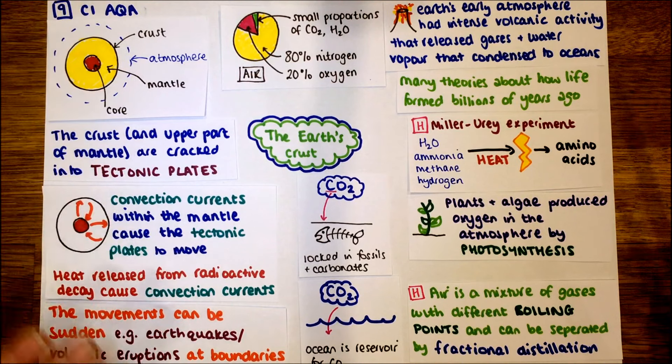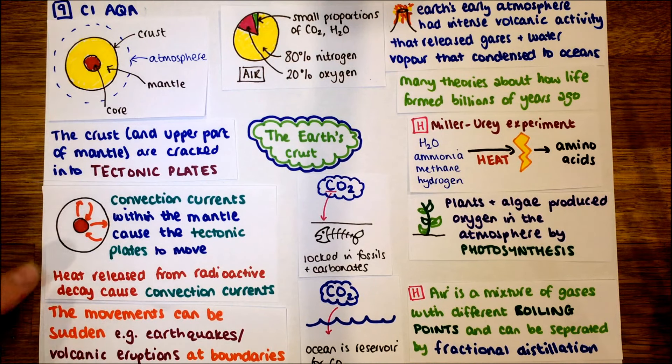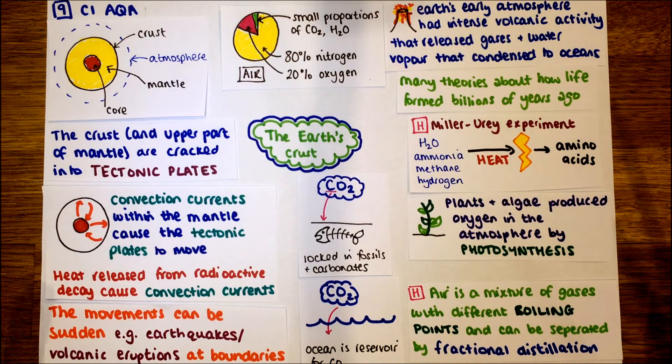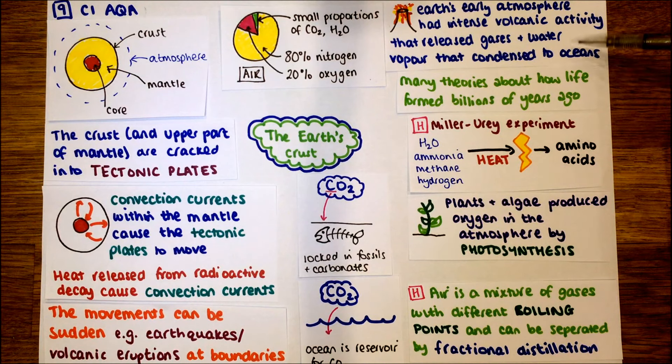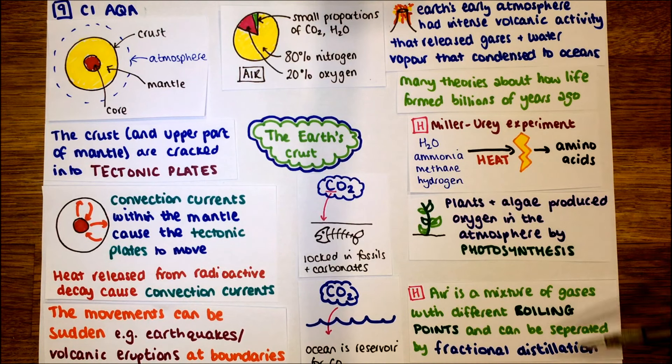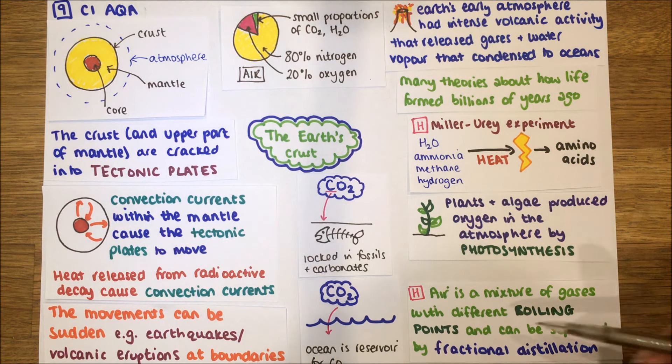So we've looked at the structure of the earth, tectonic plates, convection currents, and how they have, so how using the convection currents theory to understand how tectonic plates move, the percentage of the gases in the atmosphere, and what we think it was in early life, to sort of current day, and how we use those different components within the air.